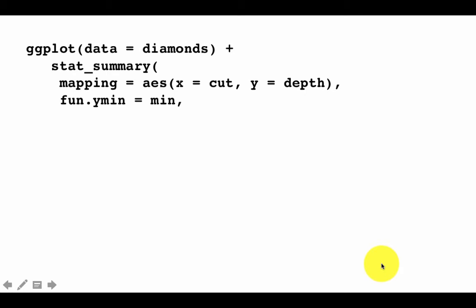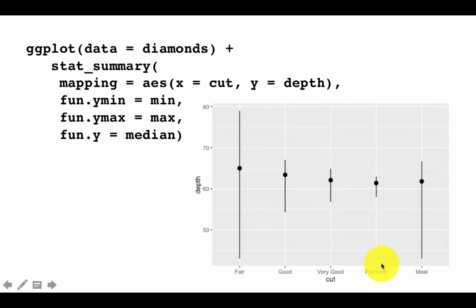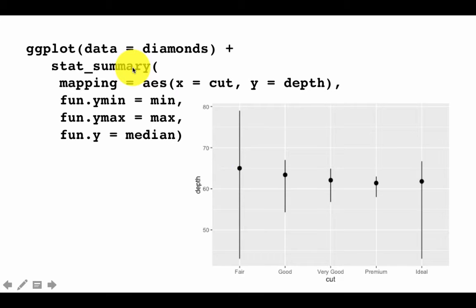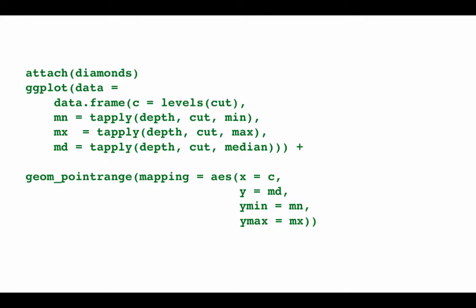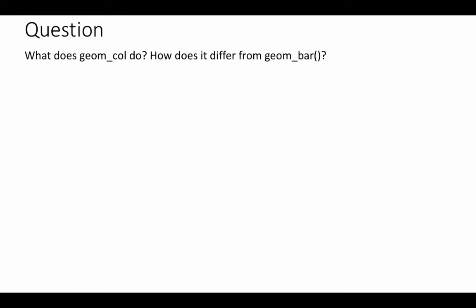Here we are seeing one more thing: a stat summary. Remember, you can say geom_something or stat_something because geoms and stats go hand in hand — every geom has an associated stat and every stat has an associated geom. There is something called stat_summary and it produces something called geom_point_range. I won't get into it now as it's a little complicated and not widely used, so I'm going to skip right through this.